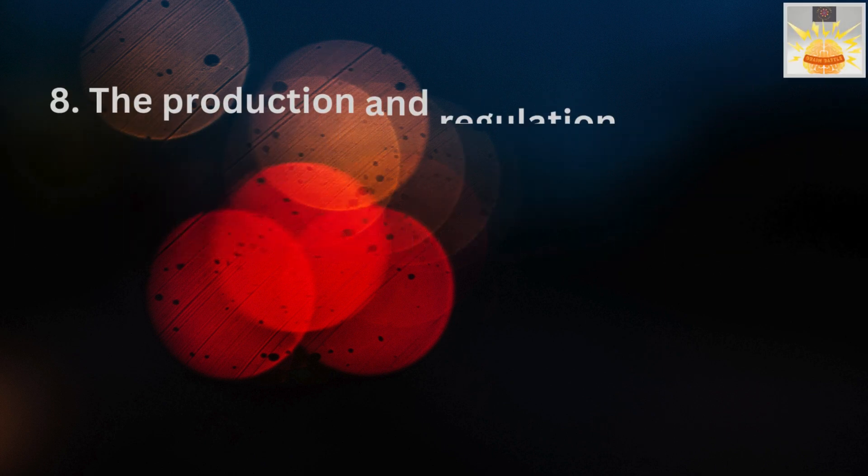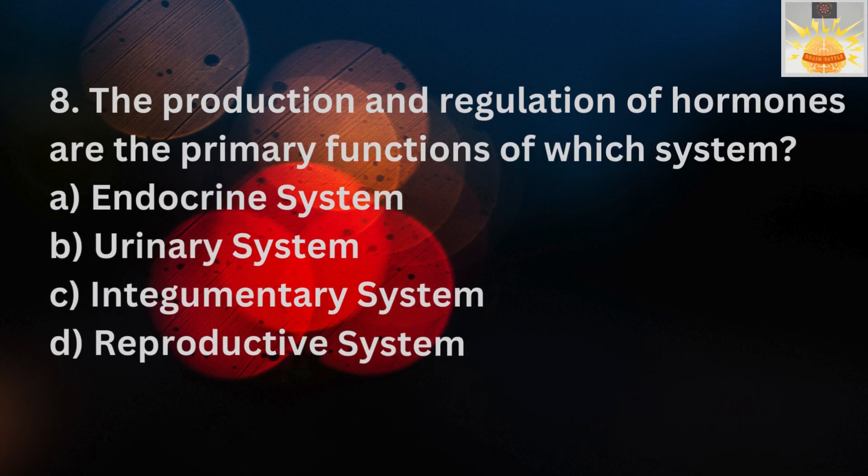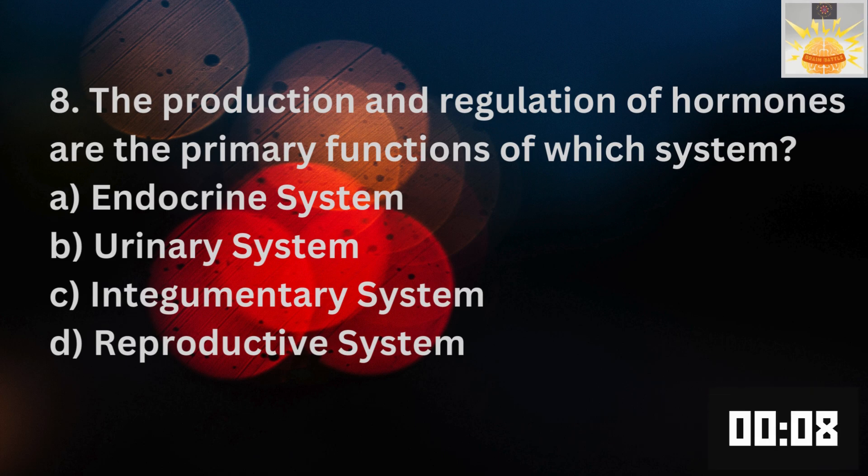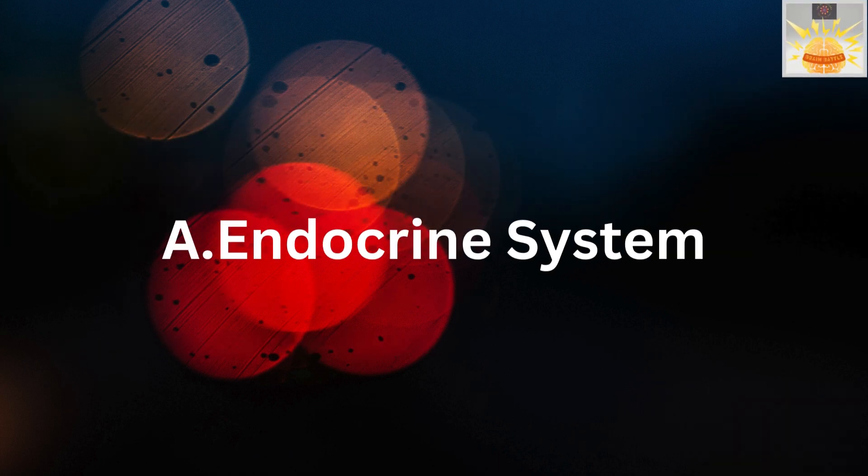Now the next question is, the production and regulation of hormones are the primary functions of which system? A. Endocrine system. B. Urinary system. C. Integumentary system. D. Reproductive system. The answer is A. Endocrine system. Hope you got it right.